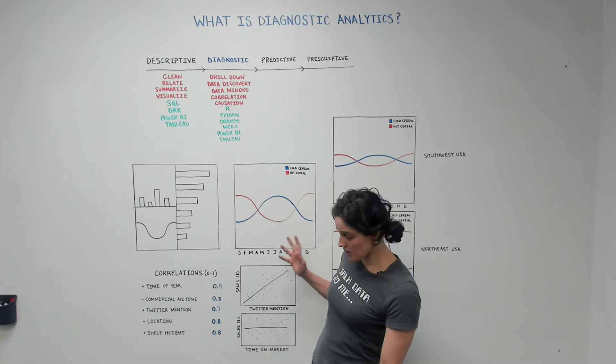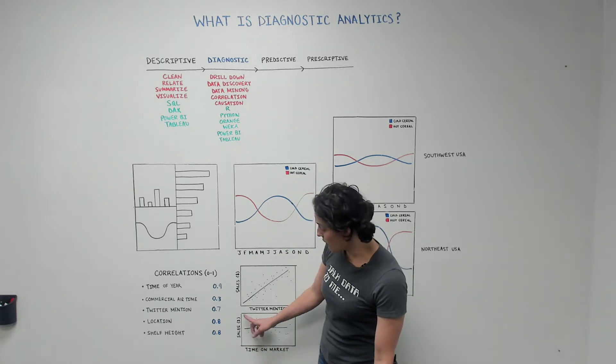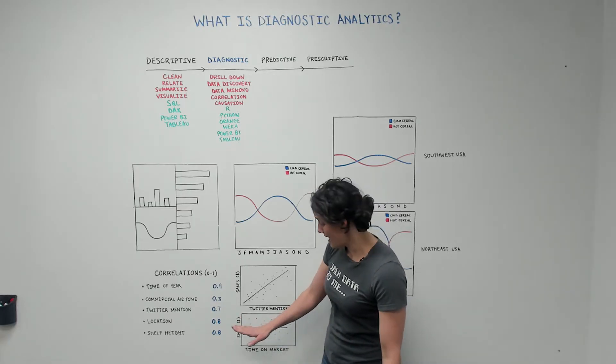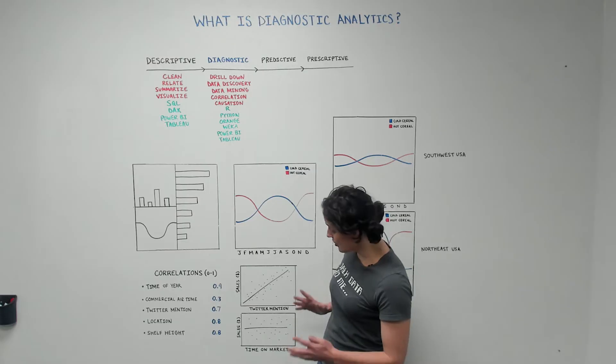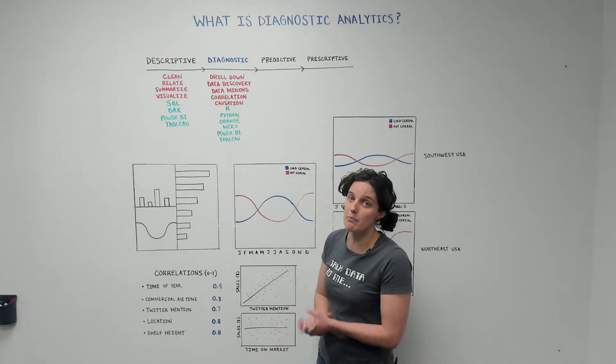In contrast, we go down here and we see time on market, and we plot it relative to sales. And these points are kind of all over the place, and the line is flat. This is just clearly not correlated. Time on market really doesn't impact the revenue.